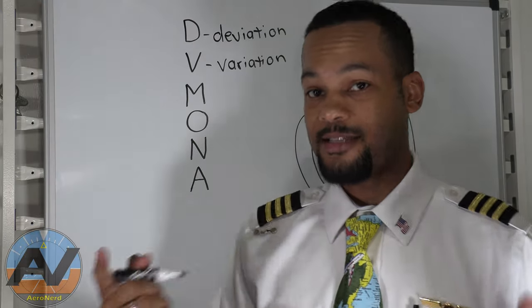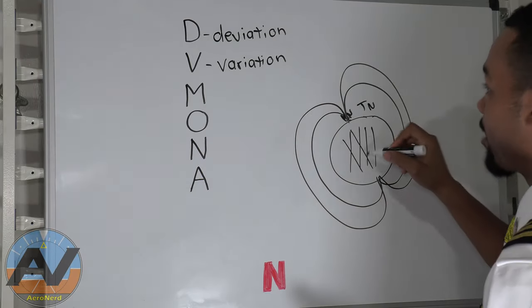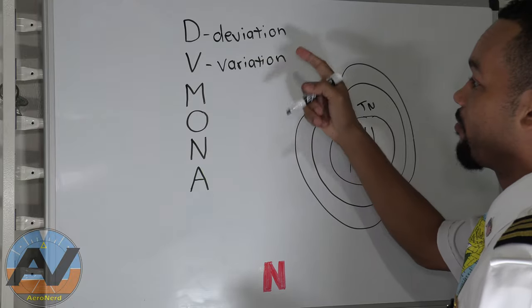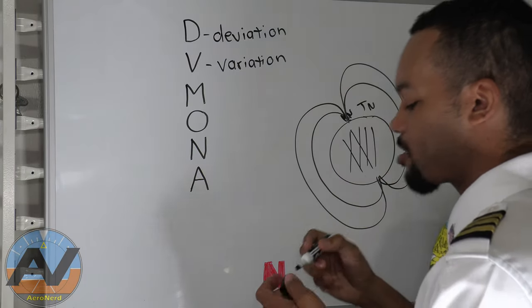And our VFR charts are lined up with true north, like this. That's why there's little variation lines that we have to go off of. Remember from your private training, east is least, west is best. Well, that is from our variation. That's literally what variation is for. But anyway, go back to deviation.